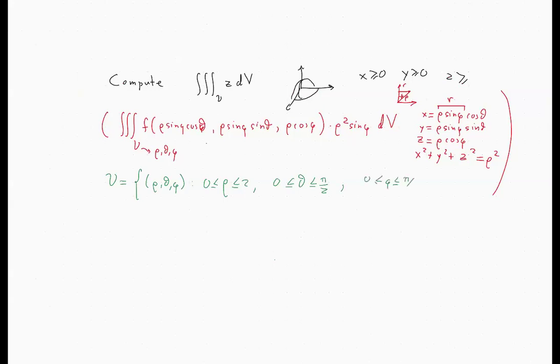Let's put the integral together. Let's start with 0 to 2 d rho, and then 0 to pi over 2 d theta, and then 0 to pi over 2 d phi. And what is our integrand now? Our integrand is z, right? So z, as we said, is rho cosine phi. And finally, we need to multiply by the Jacobian. So the Jacobian is rho squared sine phi.